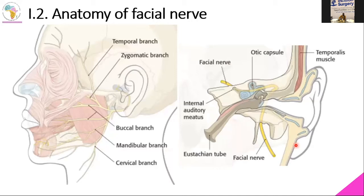The extratemporal facial branches — temporal, zygomatic, buccal, marginal mandibular, and cervical — are shown in the corresponding image. The facial nerve branches generally innervate the facial muscles, with the exception of the levator anguli oris, the buccinator, and the mentalis muscles.